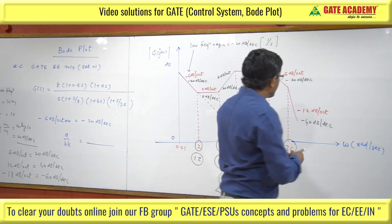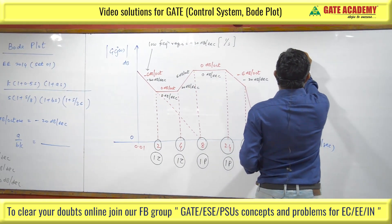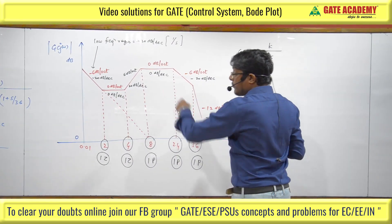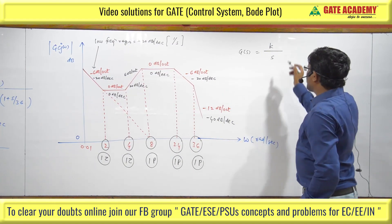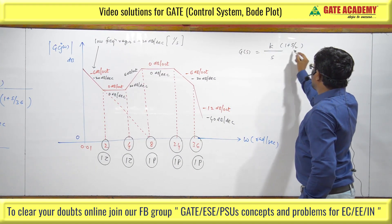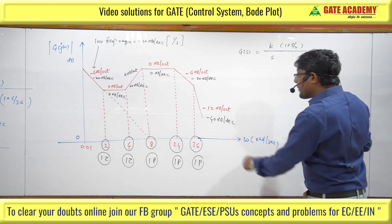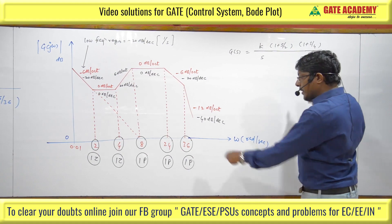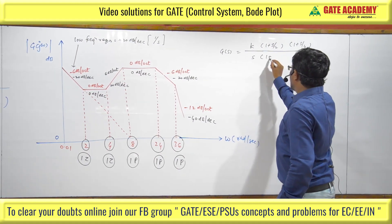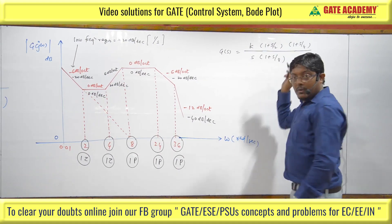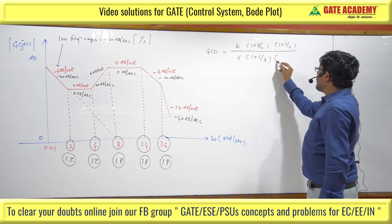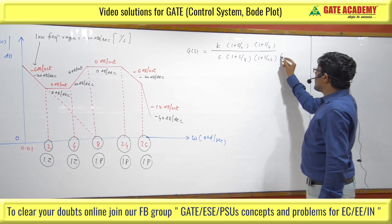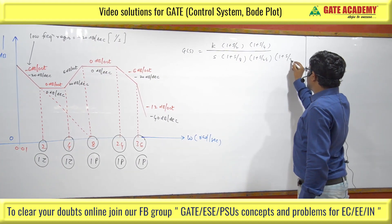Writing G(S): K divided by S (one pole at origin, initial slope minus 20 per decade), multiplied by (1 + S/2) — zero at 2, multiplied by (1 + S/4) — first-order zero at 4. Then denominator factor (1 + S/8) — pole at 8, times (1 + S/24) — pole at 24, times (1 + S/36) — first-order pole at 36.